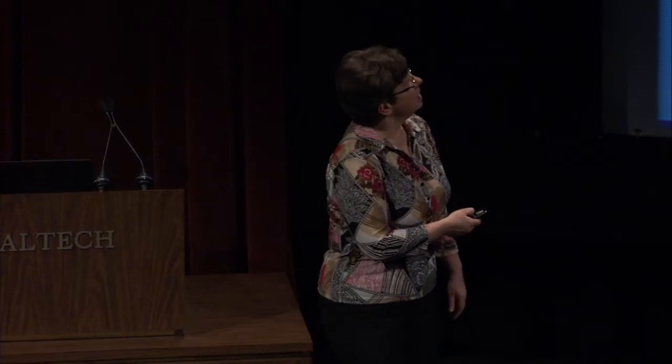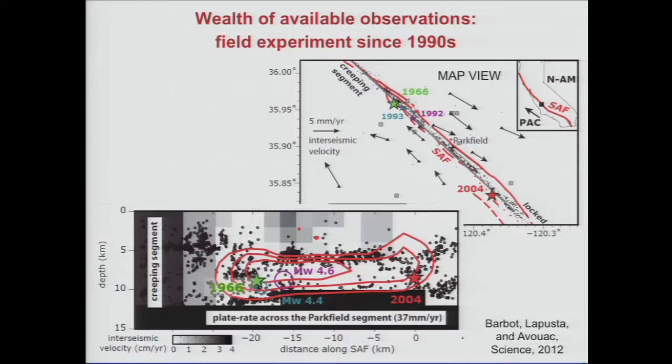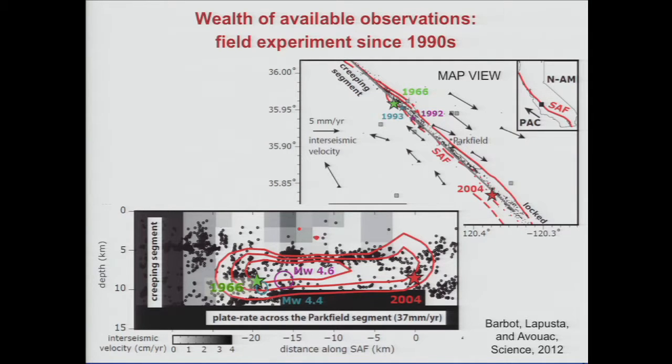This is the sort of unpredictability you have even in this simple system of this little segment. But also it's a great place to apply your models, because the behavior is relatively regular and we have a lot of information. We don't just know recurrence times — we have a whole host of different data sets. Here we have GPS measurements of interseismic velocity — how the fault moved before the 2004 earthquake. These arrows clearly show the motion of the two sides: Pacific plate and North American plate. As you go closer to the fault, the motion decreases because the fault is stuck.